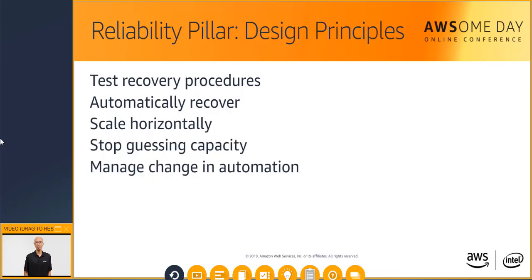Design principles that can increase reliability include testing recovery procedures. In the cloud, users have the ability to test how systems fail and can validate their recovery procedures. Users can simulate and expose different failures, then rectify them before a real failure occurs. Automatically recover from failure — in AWS, users can trigger automated responses when thresholds are breached, making it possible to anticipate and remediate failures before they occur. Scale horizontally to increase aggregate system availability: replace one large resource with multiple small resources to reduce the impact of a single point of failure on the overall system.